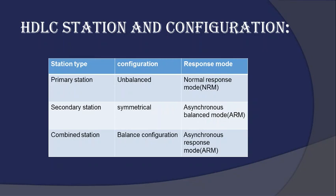The combined station is a combination of primary and secondary and cannot perform any function without the permission of primary and secondary stations. There are three configurations under which HDLC is defined: unbalanced, balanced, and symmetrical. The unbalanced configuration consists of a primary station and one or more secondary stations — unbalanced because one station controls the others. In balanced configuration, the HDLC link consists of two or more combined stations, each with equal and complementary responsibility. In symmetrical configuration, two independent point-to-point unbalanced station configurations exist, where each station has both primary and secondary status and is logically considered as two stations.